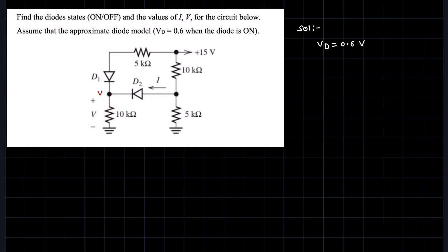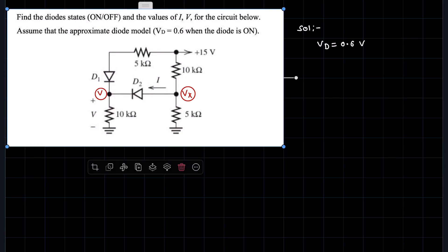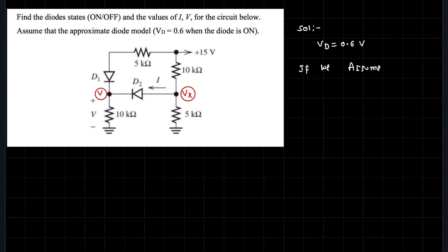From the given data, this node voltage is V, which is clearly mentioned. Let's take this node voltage as Vx, and this node voltage is V, which is already clearly mentioned. Now, if we assume both diodes D1 and D2 are ON, then it is obvious that Vx minus V must equal 0.6 volts. When the diode is conducting, the forward voltage drop must be 0.6 volts, as mentioned in the problem.